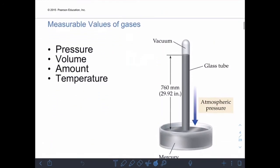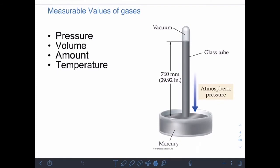So there are four main things that we can measure with gases. And those are pressure, volume, the amount of gas, and temperature. And what we have in this image is a basic version of what's called a manometer.